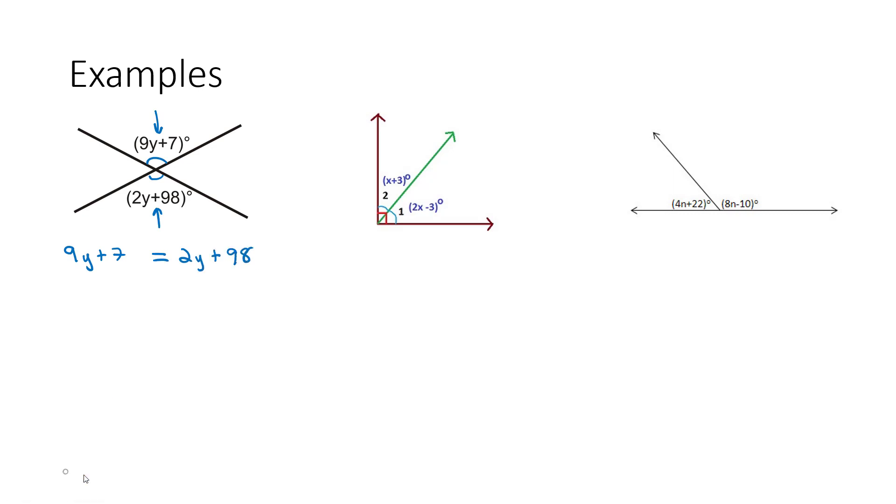This forms a linear equation that we got really good in algebra 1 solving. Balancing on the equal sign, we can subtract 2y from both sides, so that the variables are only on one side. 7y plus 7 equals 98. Subtract the 7 from both sides, and then 7y equals 91. Get the y alone by dividing both sides by 7, and y is equal to 13.